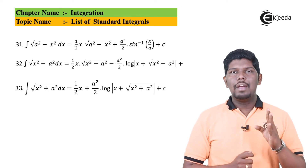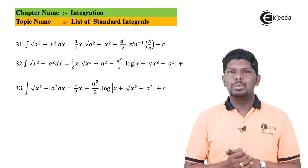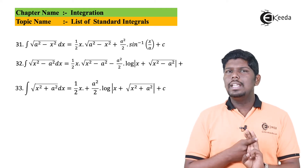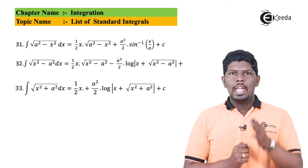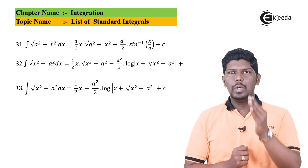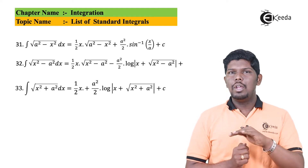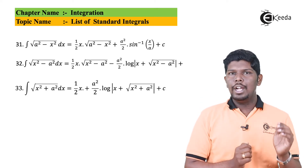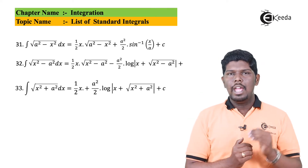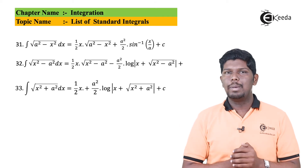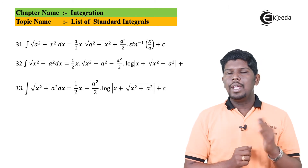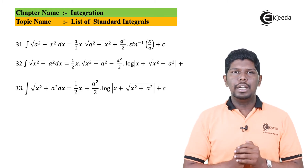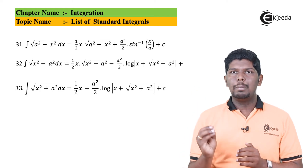The last three formulas involve integrals of under root of a quadratic expression. There are three forms: x squared minus a squared, a squared minus x squared, and x squared plus a squared. To memorize these, observe that in all three formulas the first term is the same — x by 2 — multiplied by the same under root expression. The sign of a squared by 2 follows the sign of a in the expression: positive for a squared minus x squared and x squared plus a squared, negative for x squared minus a squared.